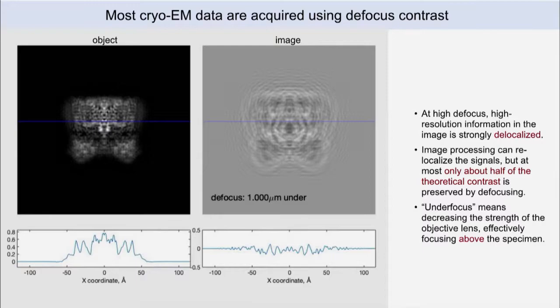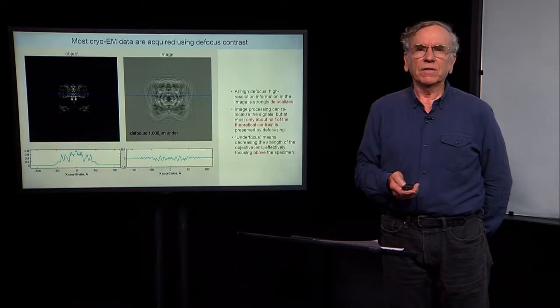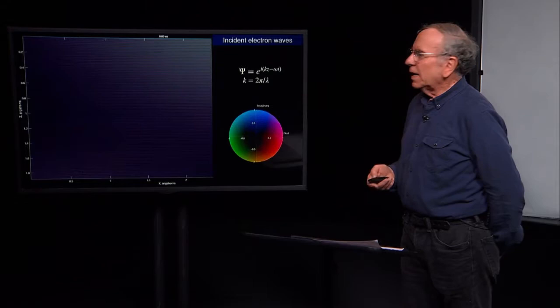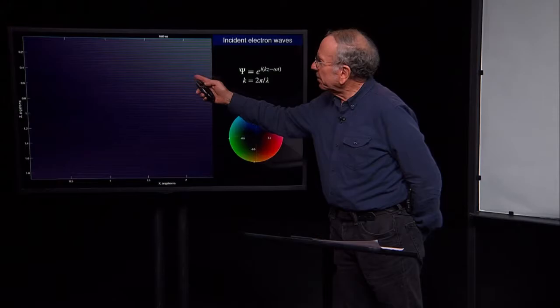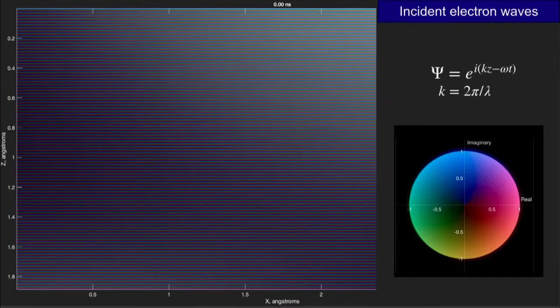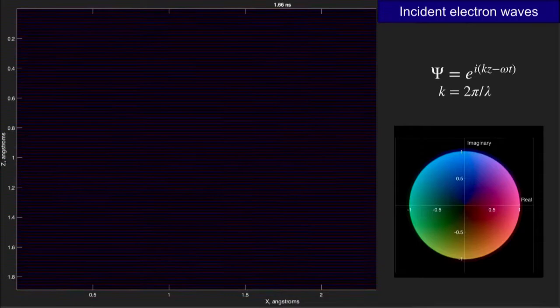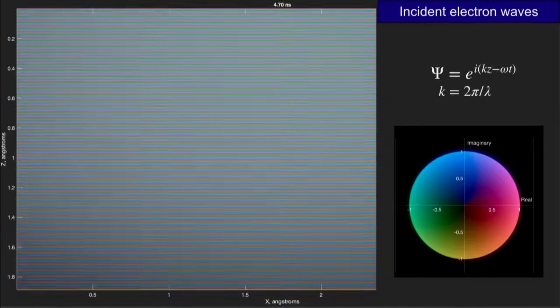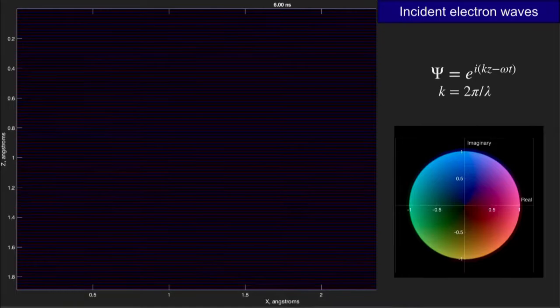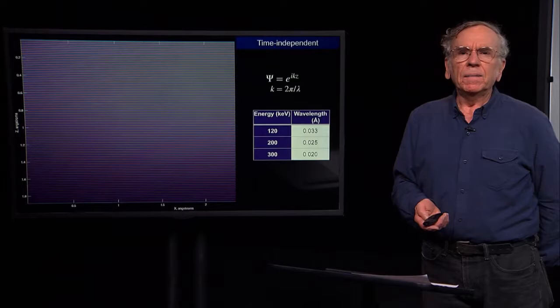To understand this, we're going to have to look at electron wave functions and electron interference. We'll start looking at what an electron wave function might look like. This is a very small region, about two by two angstroms. We're imagining we're watching the electron waves pass by an aperture in the electron microscope, on a time scale of a few nanoseconds. Roughly speaking, an electron wave in the electron microscope passes by about once every nanosecond, and the electrons are going a good fraction of the speed of light.